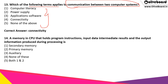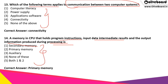The next question: a memory in the CPU, or central processing unit, that holds program instructions, input data, intermediate results, and the output information produced during processing — what is this memory? The correct answer is option 2, that is primary memory, which stores or holds all the instructions, input data, output information, and intermediate results.